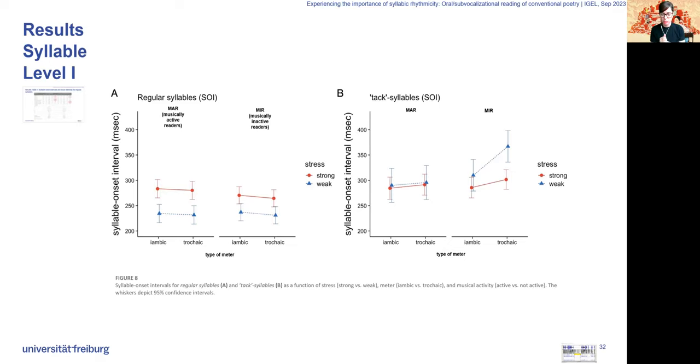The data suggests that musically active readers make no distinction regarding stress as well as meters. You see the lines here in graphical illustration are very near. Whereas musically inactive readers exhibit longer syllable onset intervals for the weakly stressed tux and more so in a trochaic poem.